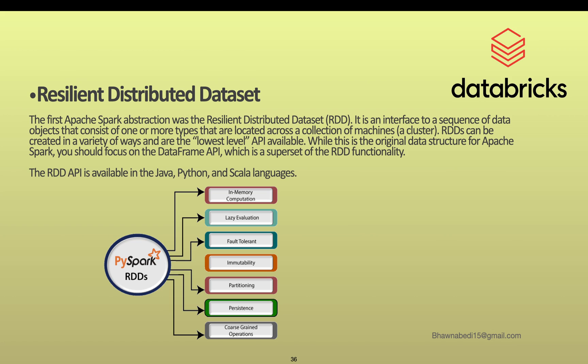RDDs are the lowest-level APIs available in Spark. The first version of Spark itself was built on top of RDDs. But in day-to-day programming or work, we do not use Resilient Distributed Datasets that often — mostly we go with DataFrames. RDDs are still used but they are restricted because we have a better version, which is DataFrames, and also Datasets.